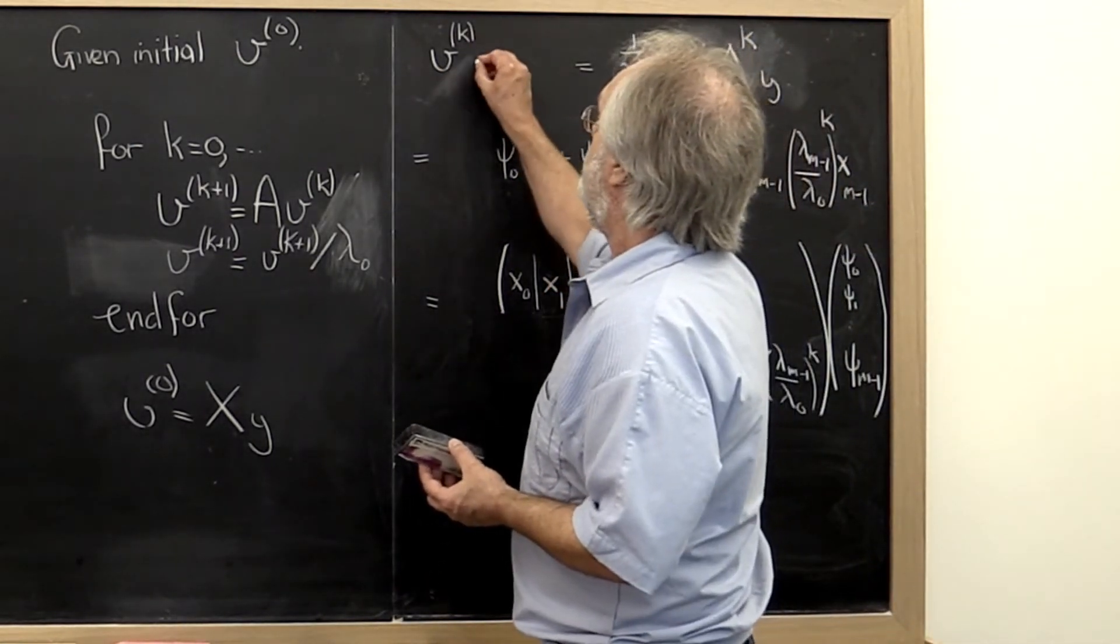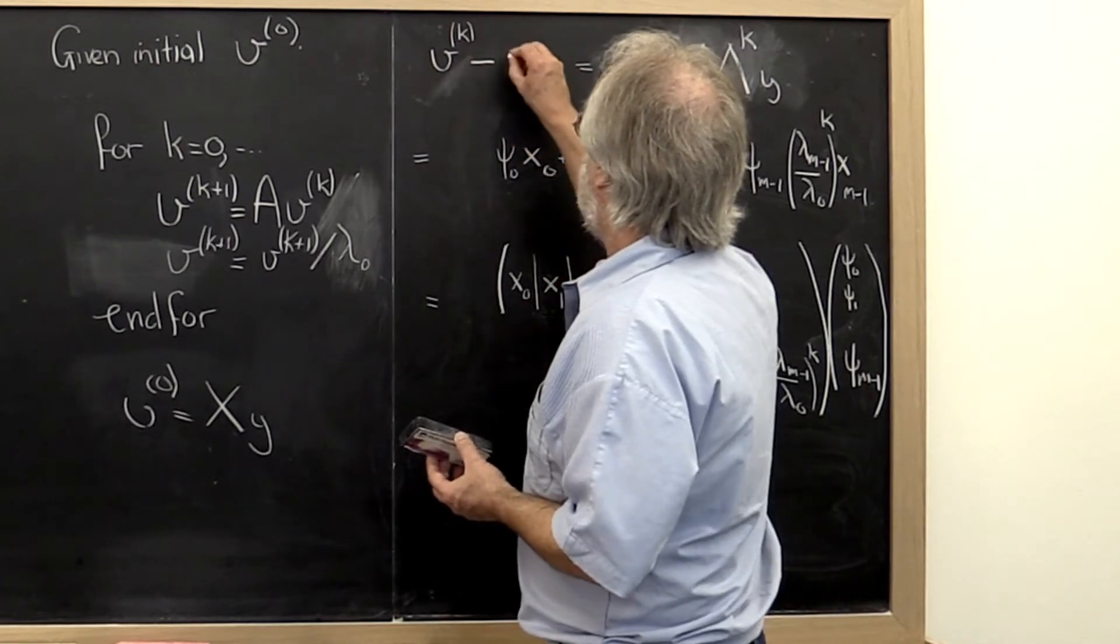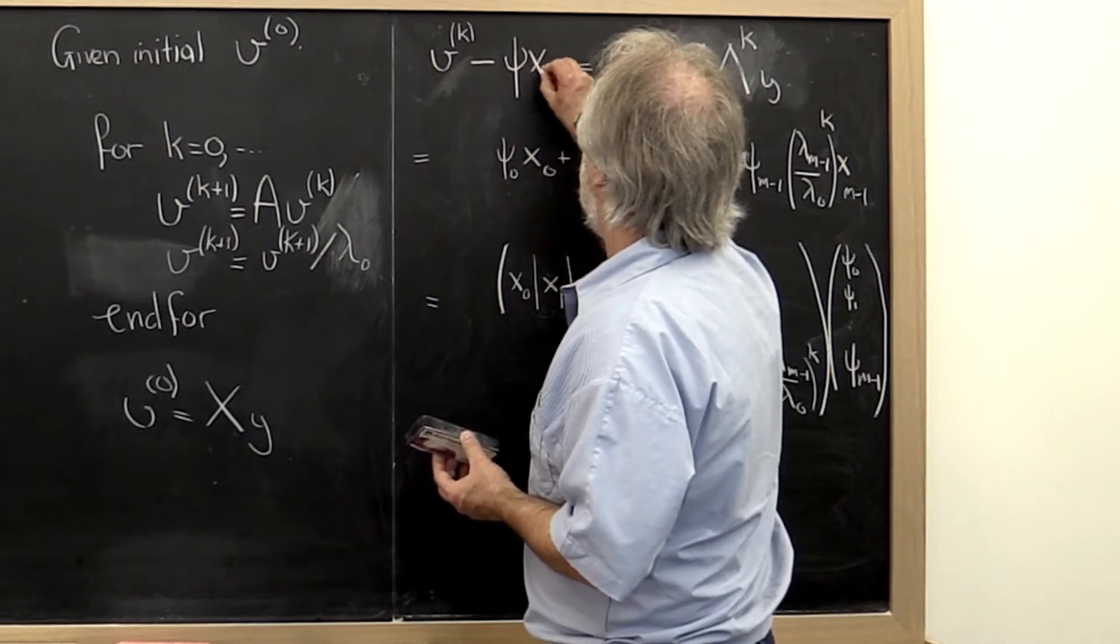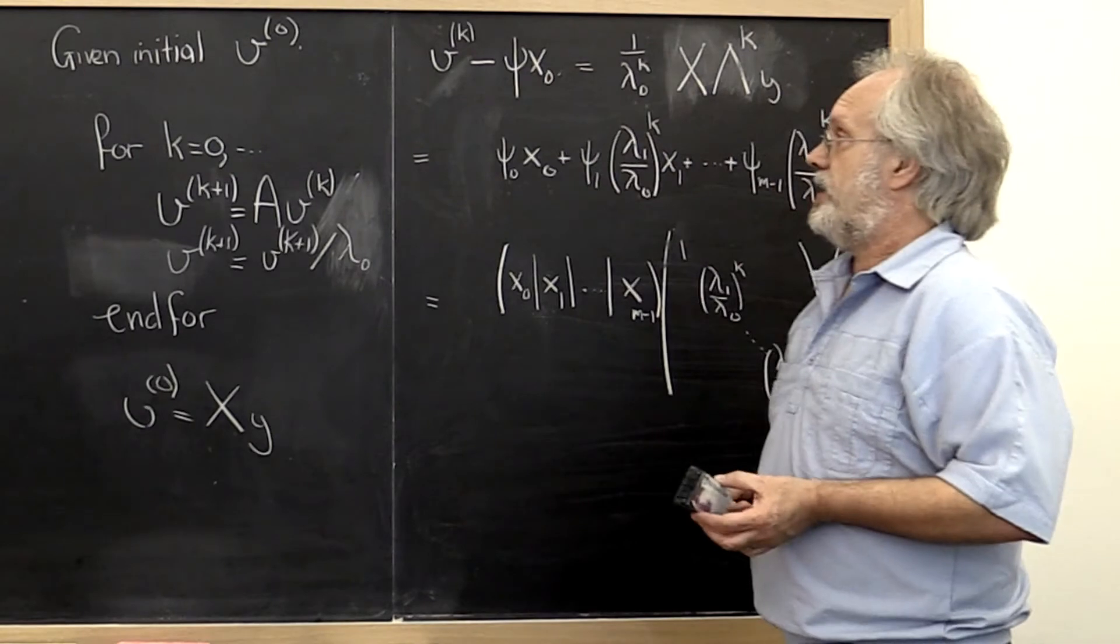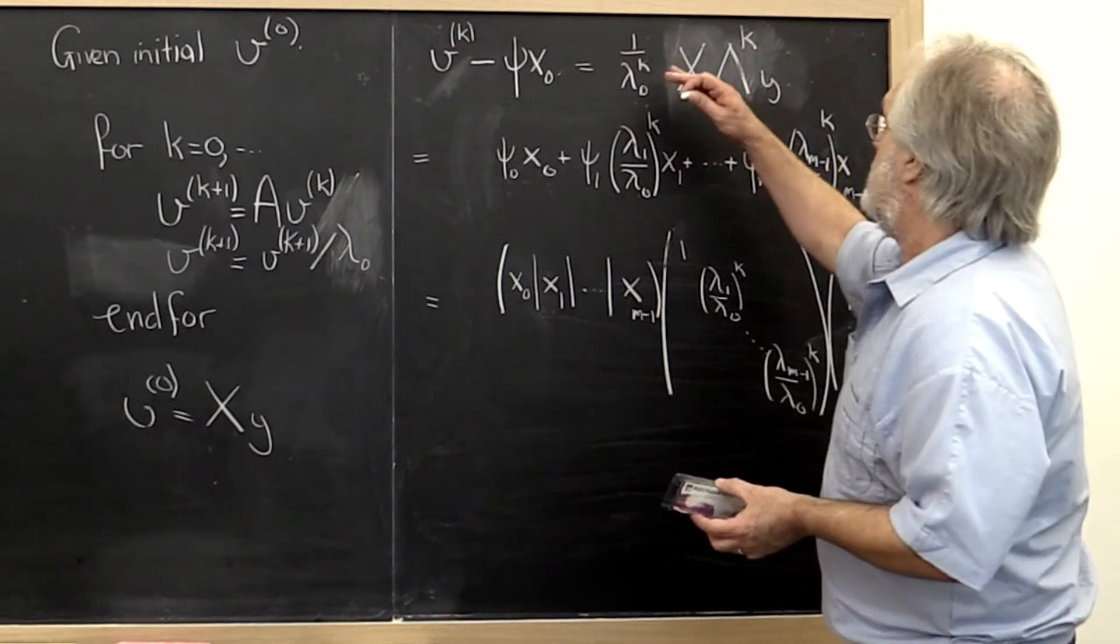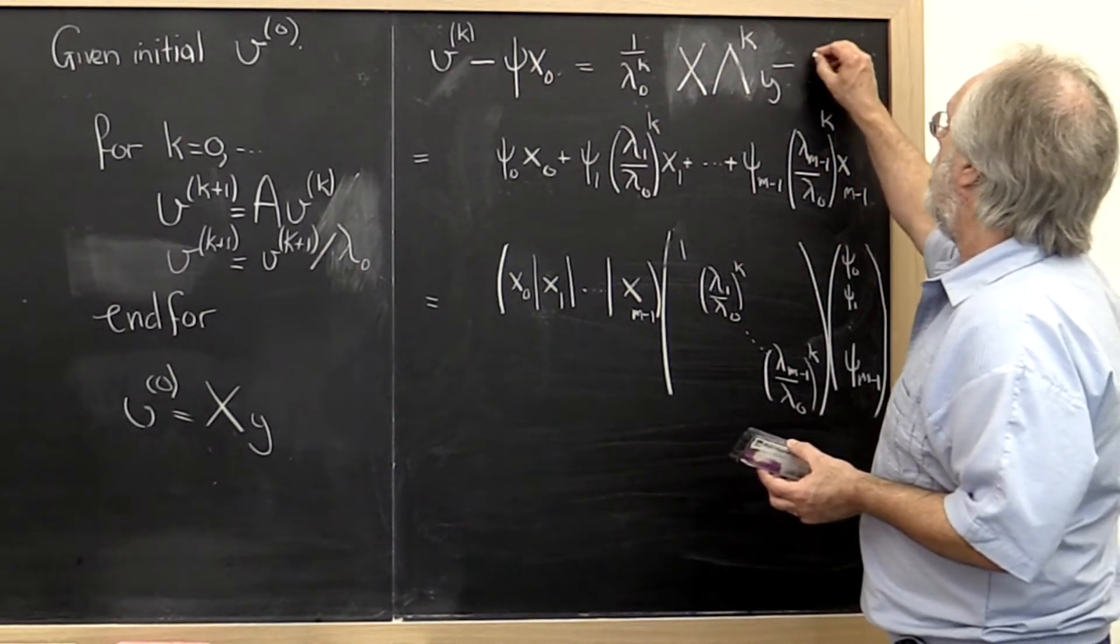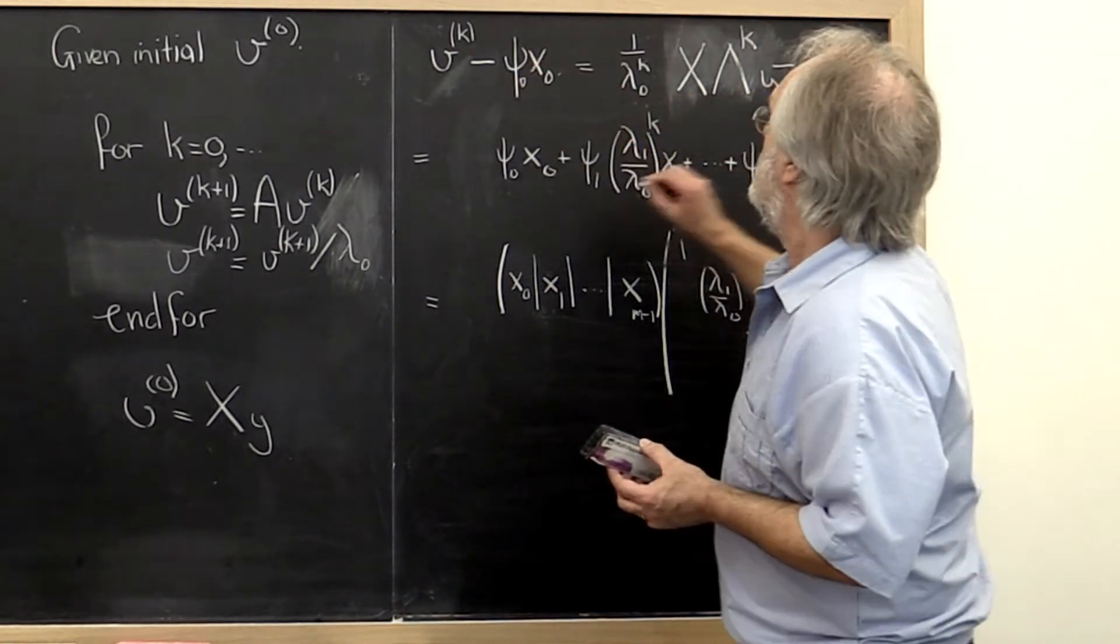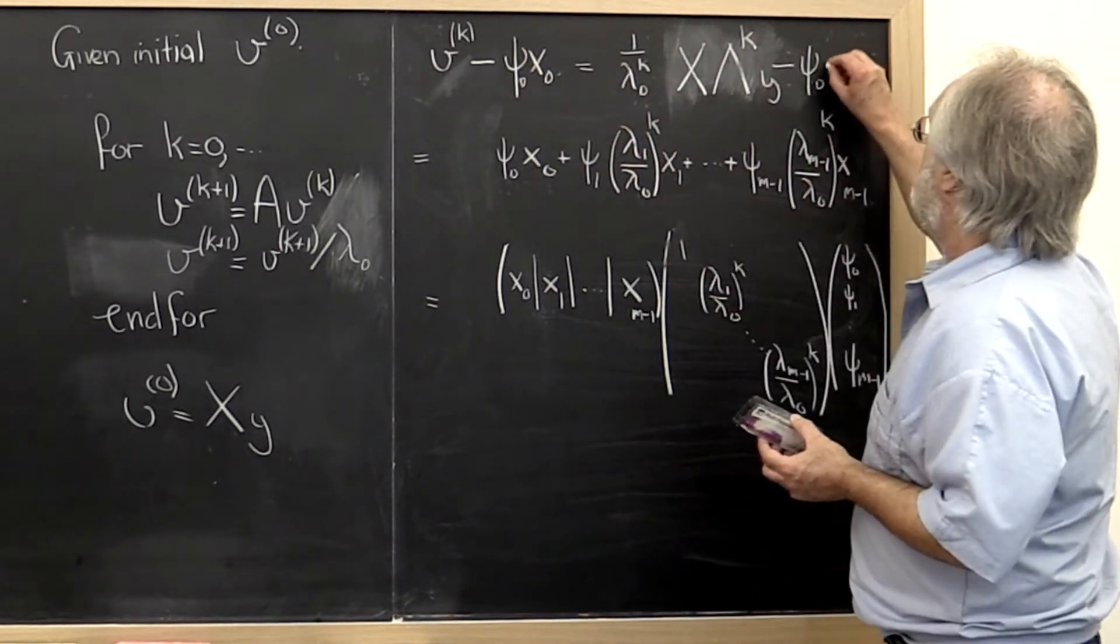We can take our vector vk and say, okay, eventually we know it's going to point in that direction. That's the same as taking this expression and subtracting off psi 0 times x0.